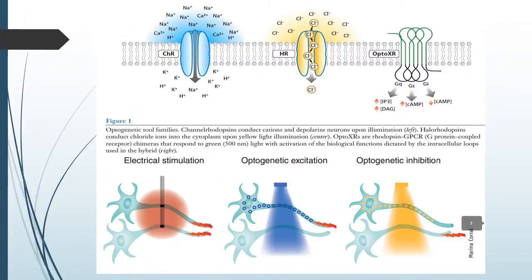To install this protein into the neuron, the section of DNA that codes for this protein is identified and then inserted into the DNA of the neuron using techniques of genetic engineering. After this is done, the protein expresses itself on the neuron's surface, and we have a light-sensitive neuron which can be excited or inhibited using a light stimulus.